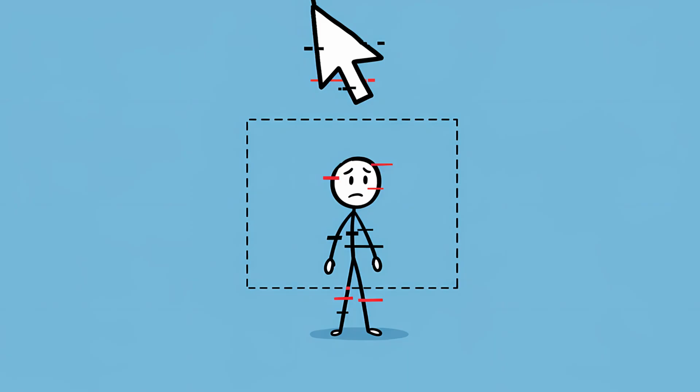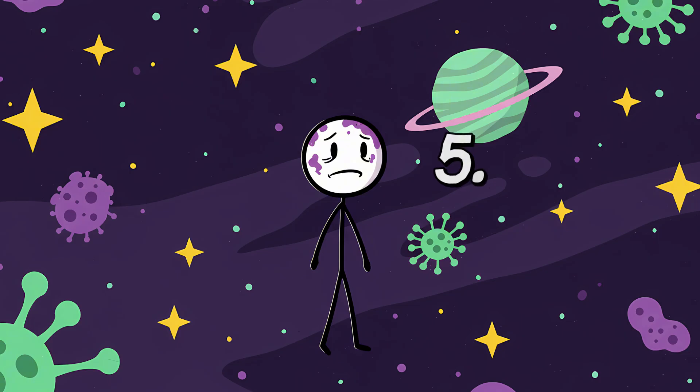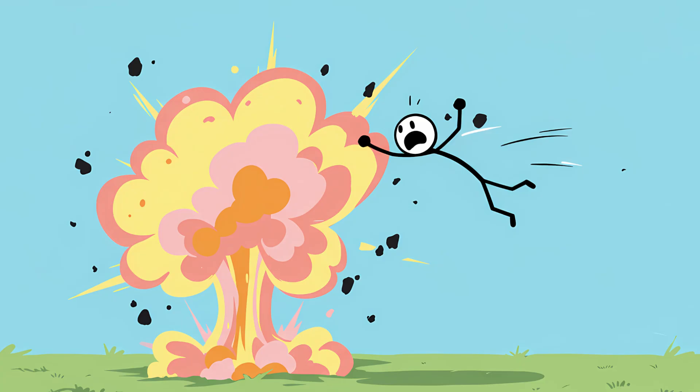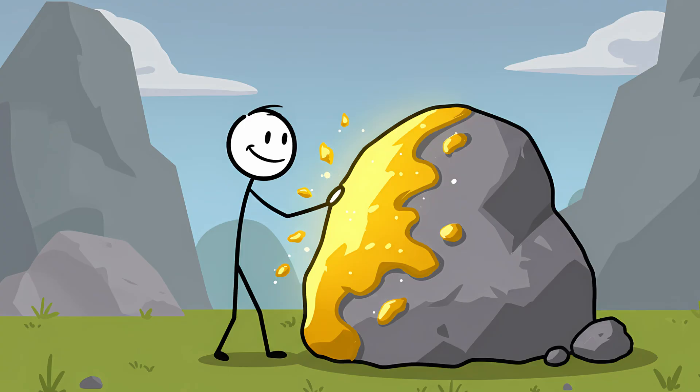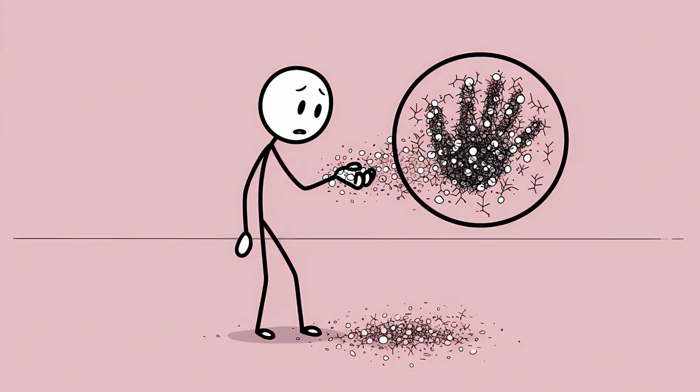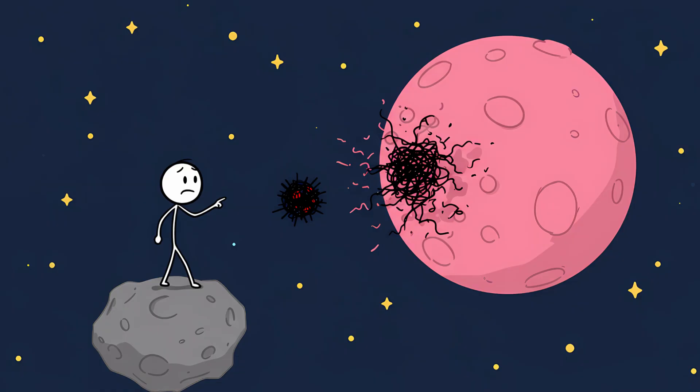Number five, the cosmic plague. We tend to think of threats as things that break other things: an explosion, a collision, an impact. But some of the most terrifying threats don't destroy, they convert. Think of a zombie virus or the mythical King Midas, where a single touch changes something into something else entirely. Now apply that concept to the very atoms that make up our world.